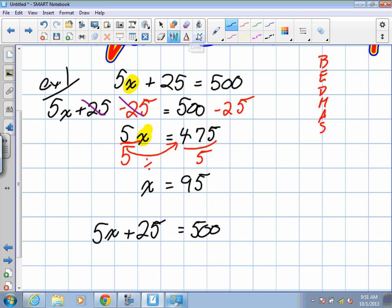5x plus 25 equals 500. Same idea of reverse BEDMAS. We want to move positive 25. In order to move positive 25 to the other side, what operation do we use? Subtract.